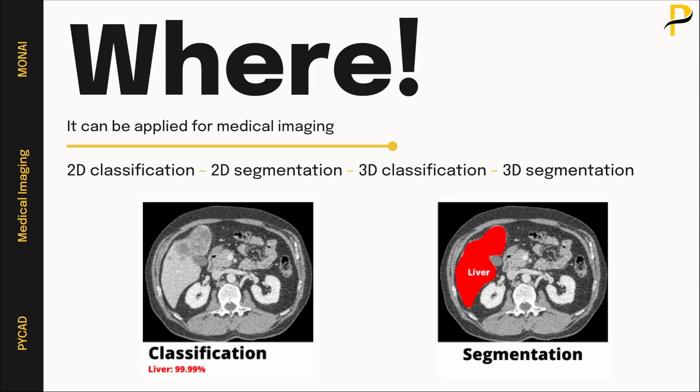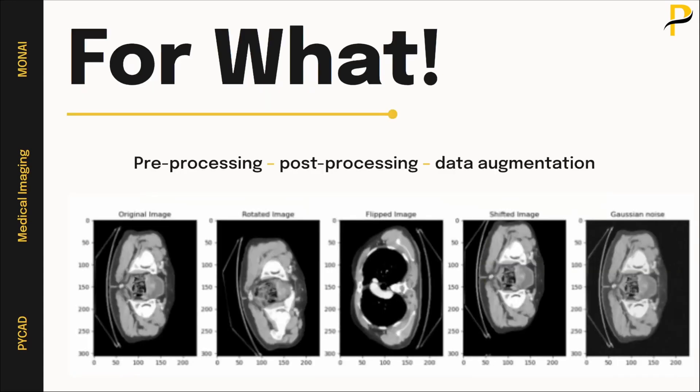In the image on the right, the liver is painted in red, and this red shape is called a mask — this is image segmentation. Instead of classifying the whole image as containing a liver or not, we classify each pixel as liver or not. When we classify the pixels we create this mask, which is what we call image segmentation.